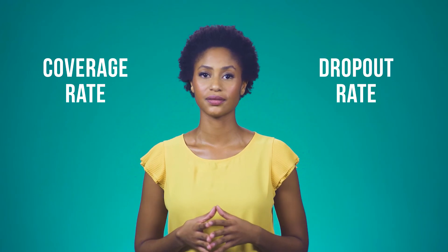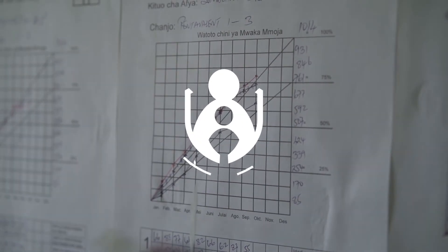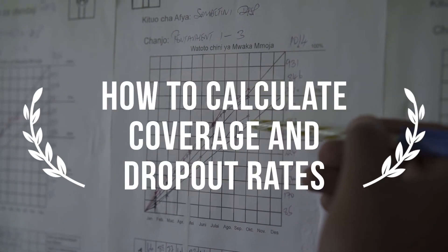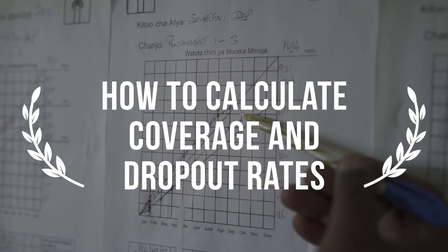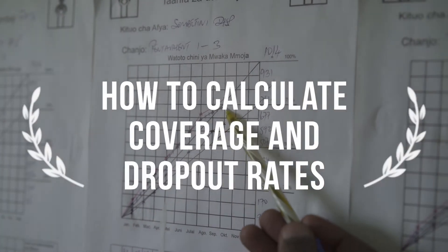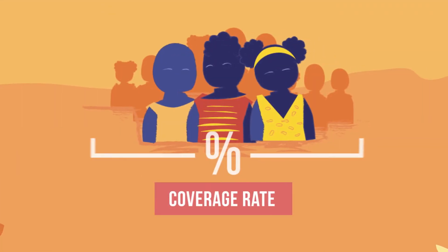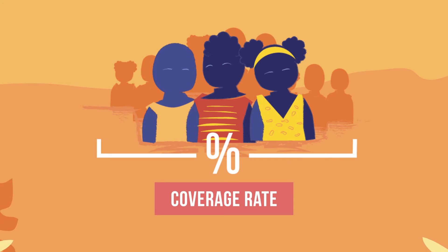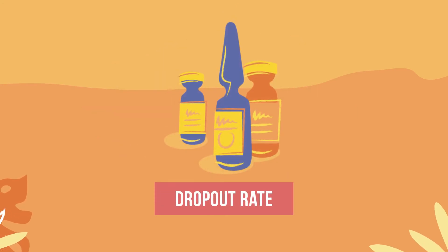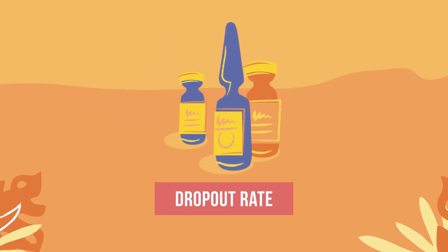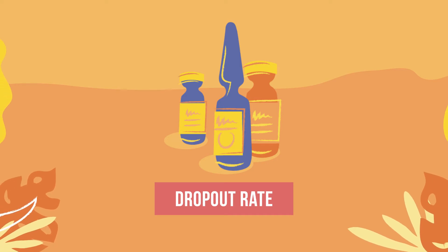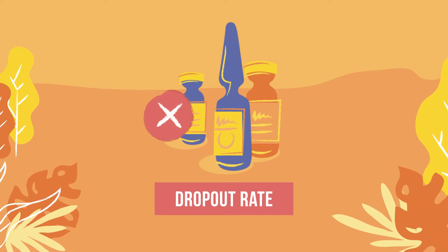Two of the most important pieces of data for you to know are your coverage rate and your dropout rate. The coverage rate shows the percentage of your target population that has been immunized with a particular dose of a vaccine. The dropout rate shows the percentage of infants who started receiving immunizations but never received all doses in a series.